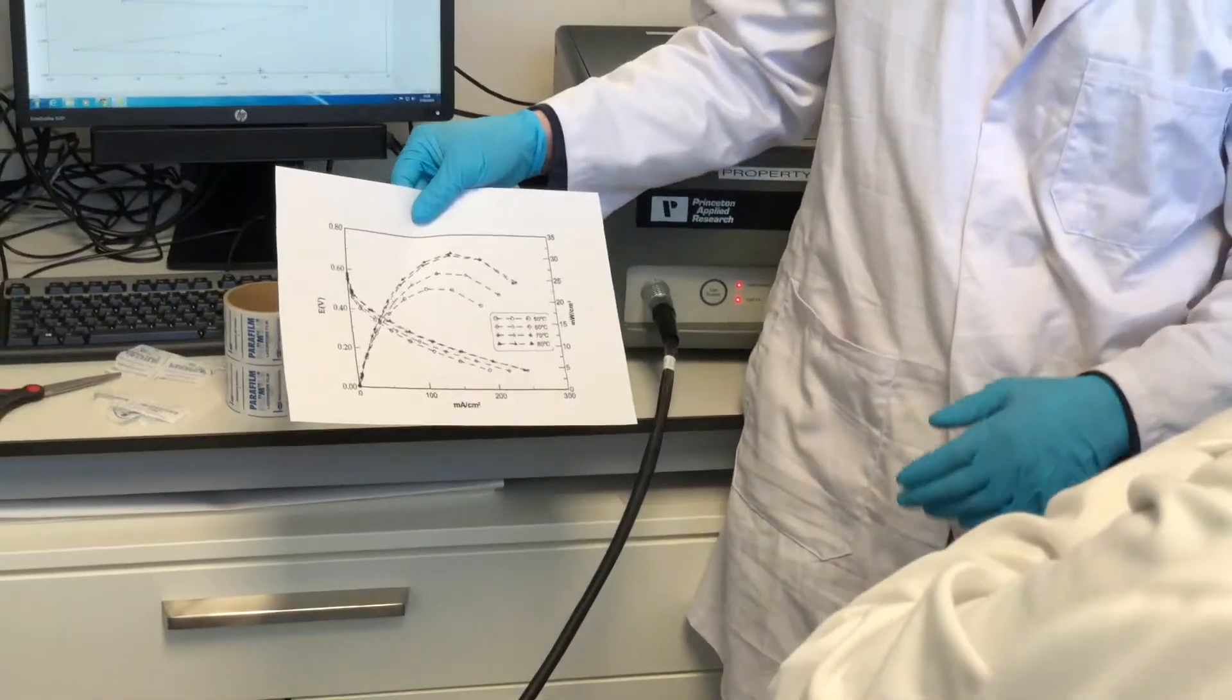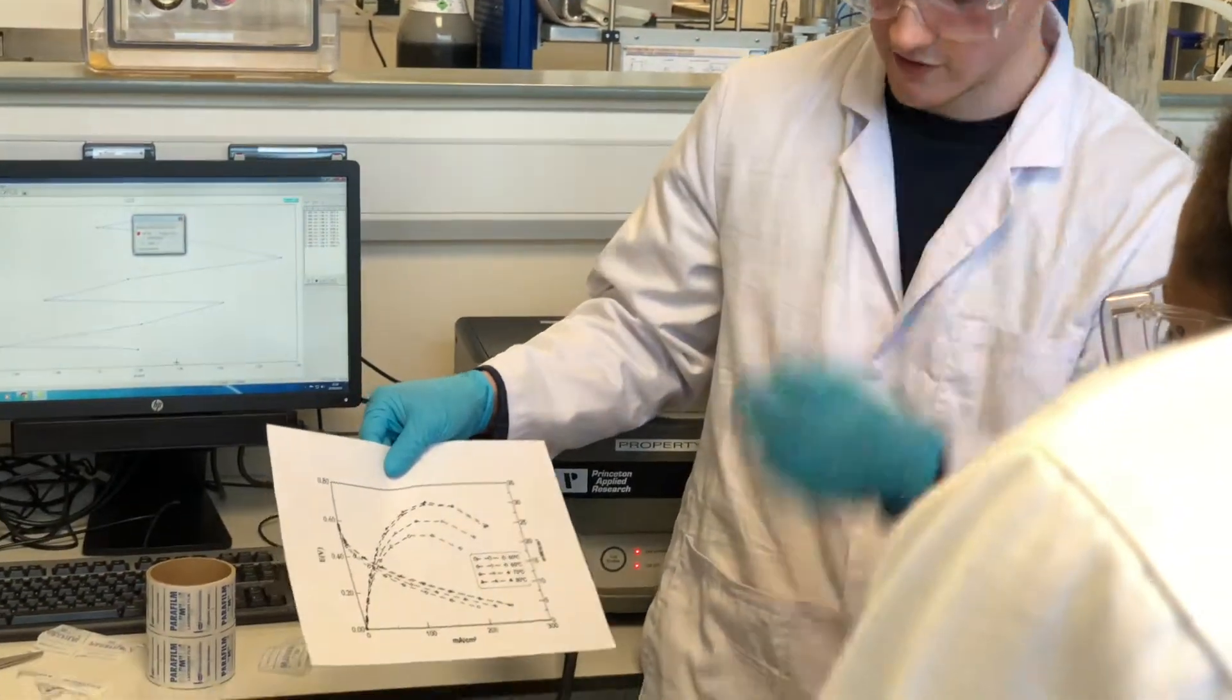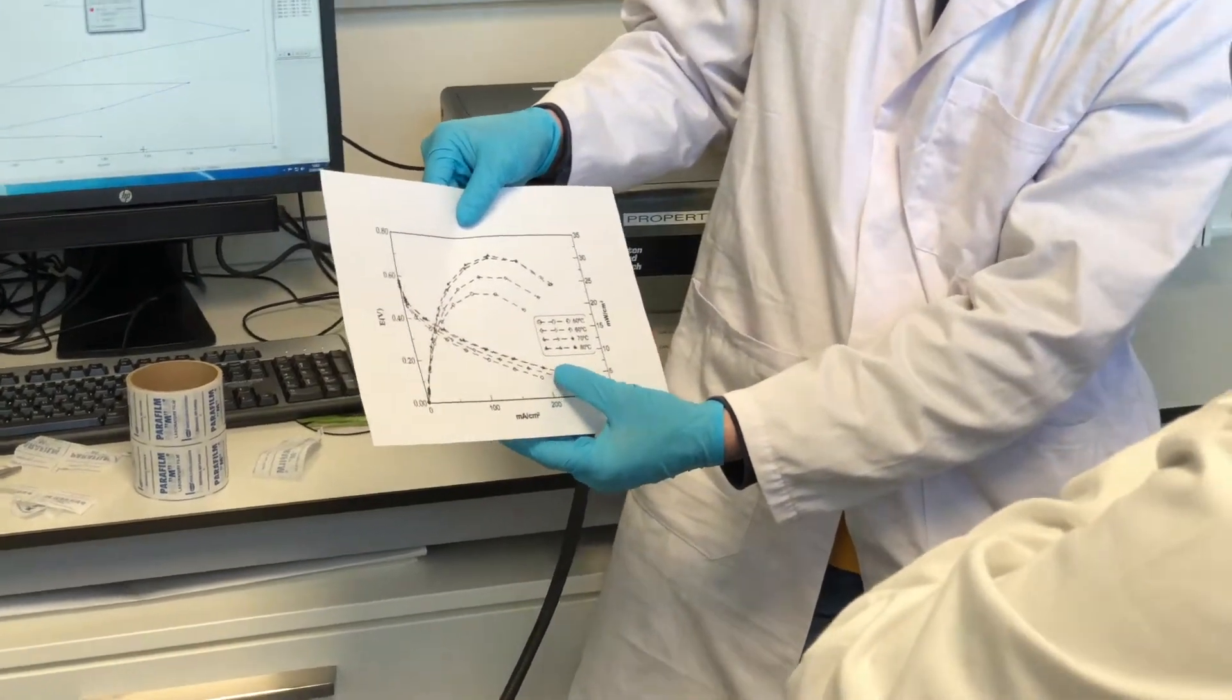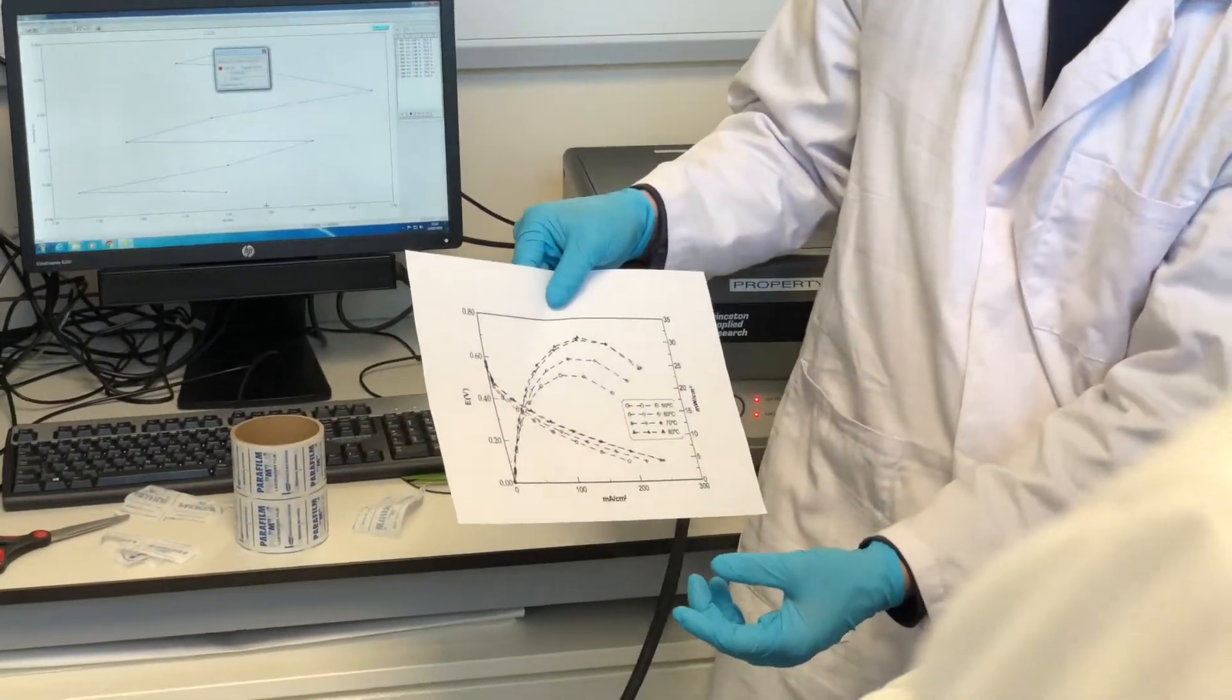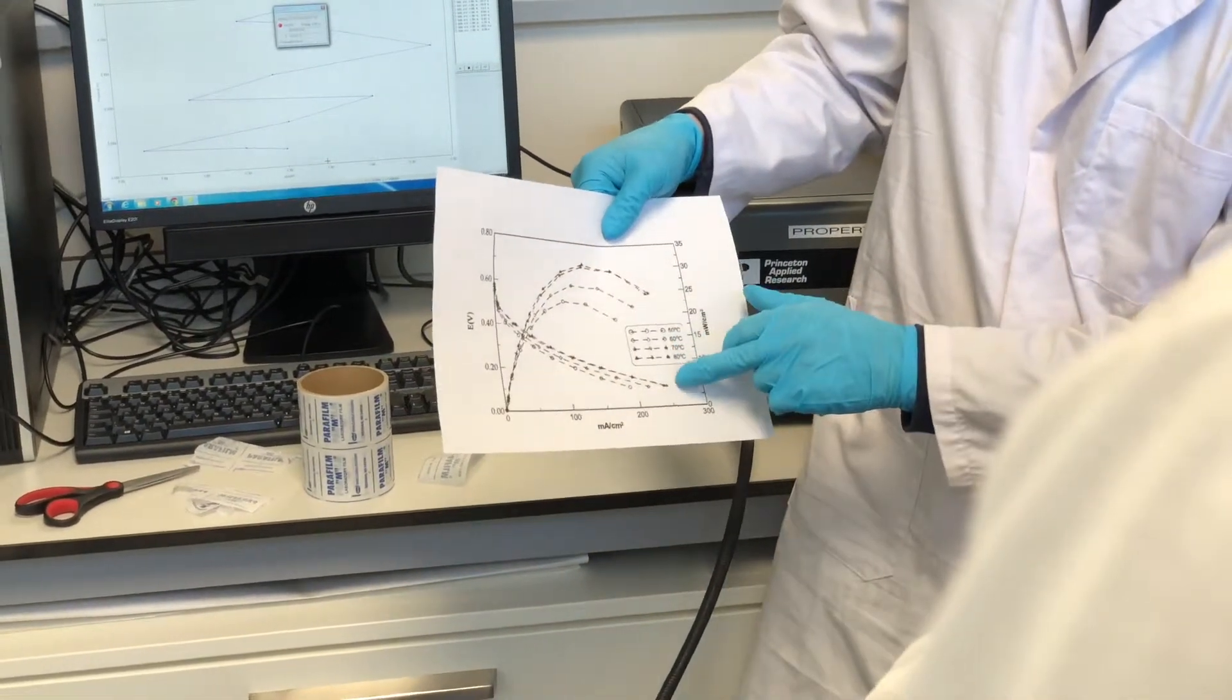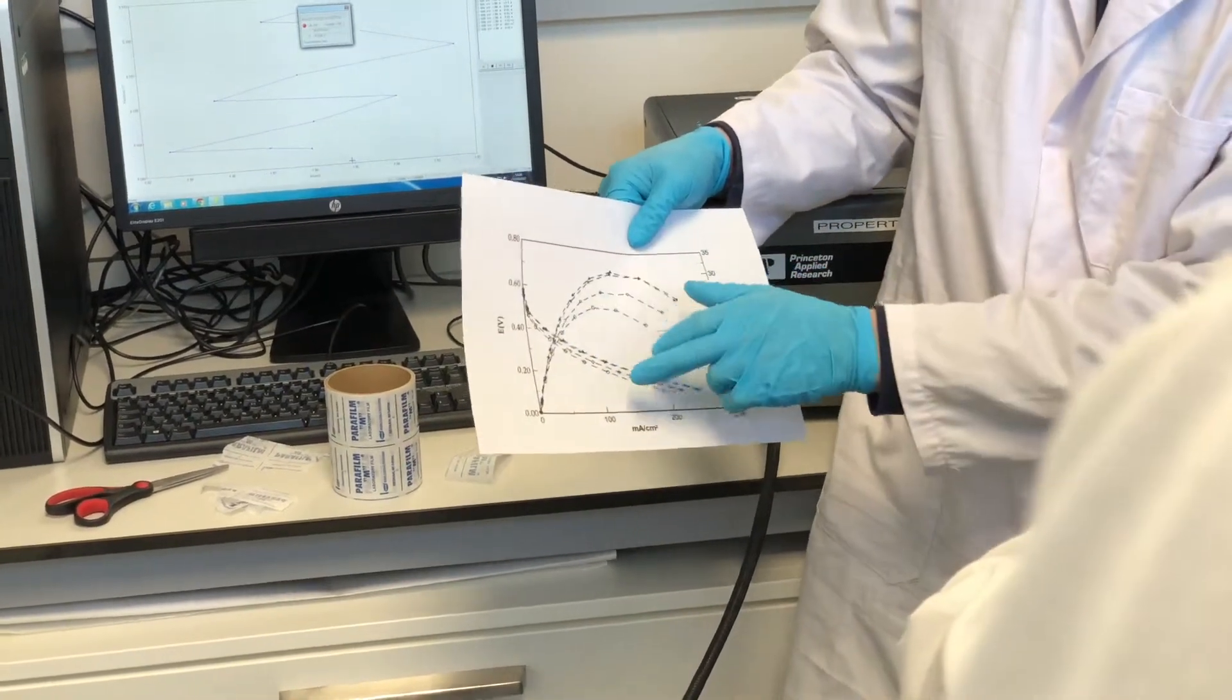We heat it up to different temperatures and then see how that affects the polarization curve. So as you can see here, as the temperature is increasing, we get an increased performance in our polarization curve. But it's only up until a certain point because this is our 70 degrees here. But then when we go to 80 degrees, it actually just stays roughly in the same place.